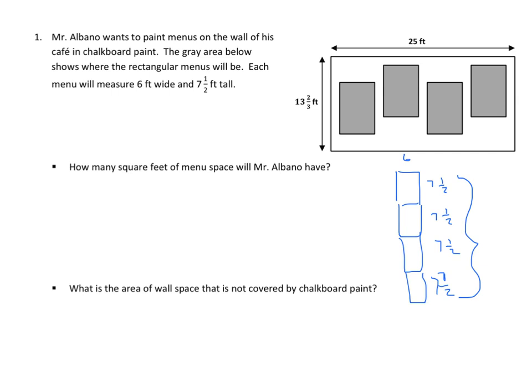So, now, what do I have? I have a whole number, and that would be 30. And I have a whole number here. So, that will give me the total area in square feet of the menu space that Mr. Albano has. So, that makes it a lot easier. And again, we have to find the area of the wall that is not covered by the chalkboard paint. So, simply find our area with 25 by 13 and 2⁄3, and then we need to subtract the total square feet of menu space. I hope that makes things easier.